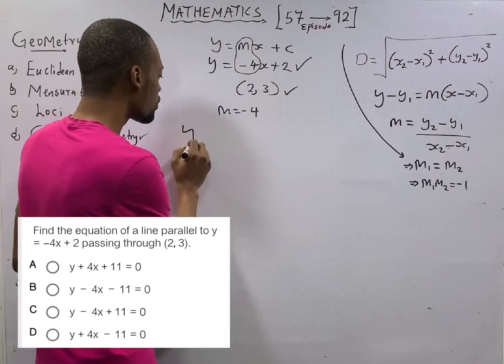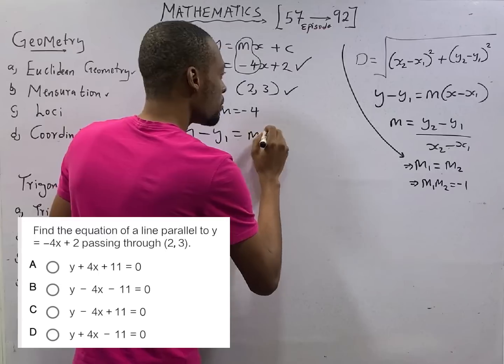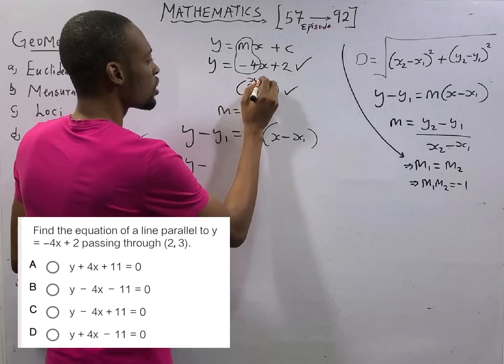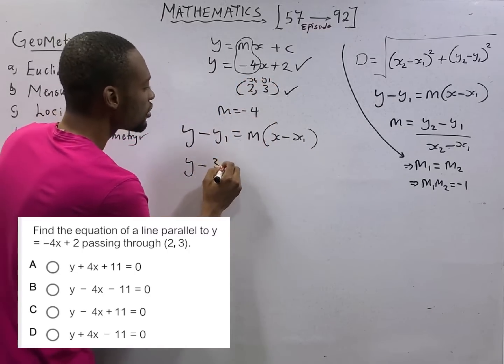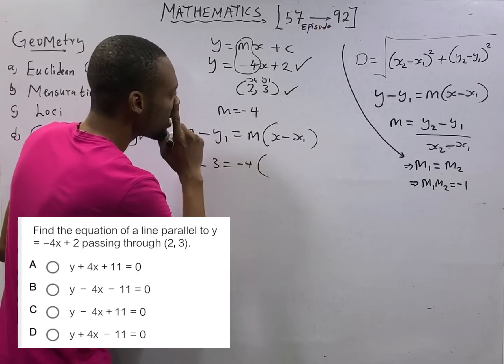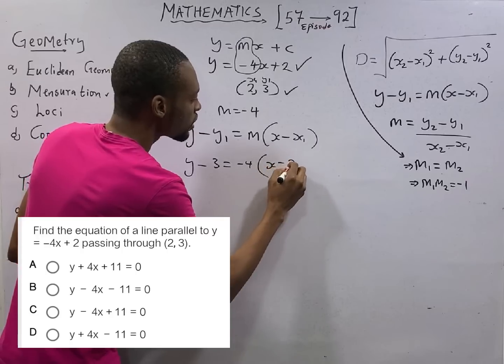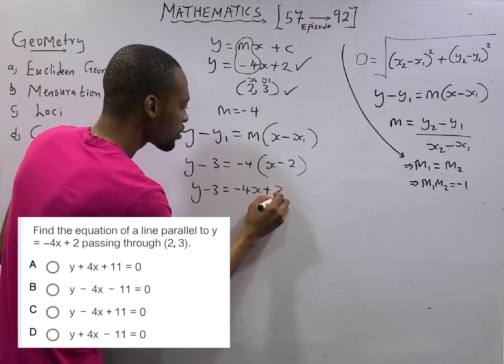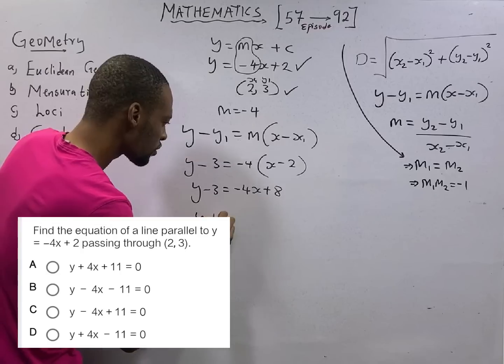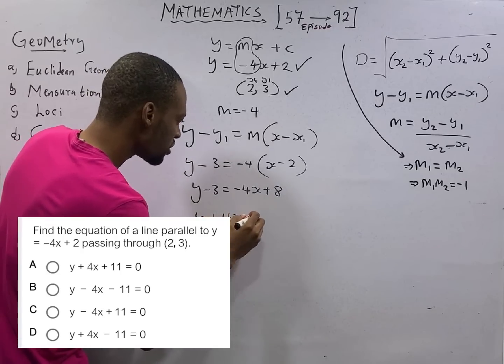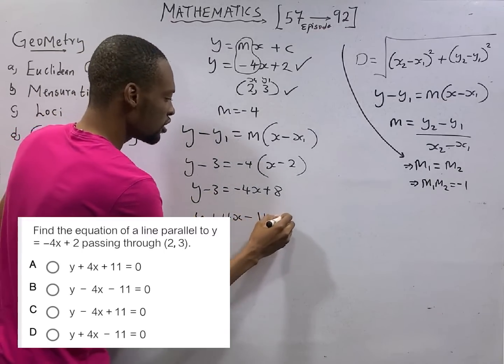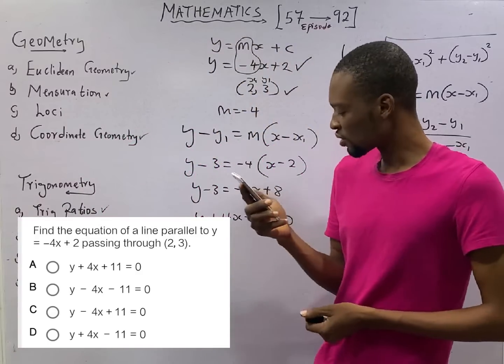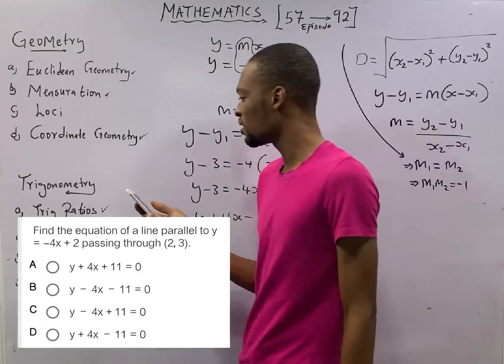From this formula for equation of line, y minus y1 equals m(x minus x1), we therefore have y minus 3 equals m, that is minus 4, times (x minus 2). This gives us y minus 3 equals minus 4x plus 8. And that is y plus 4x minus 11 equals 0.